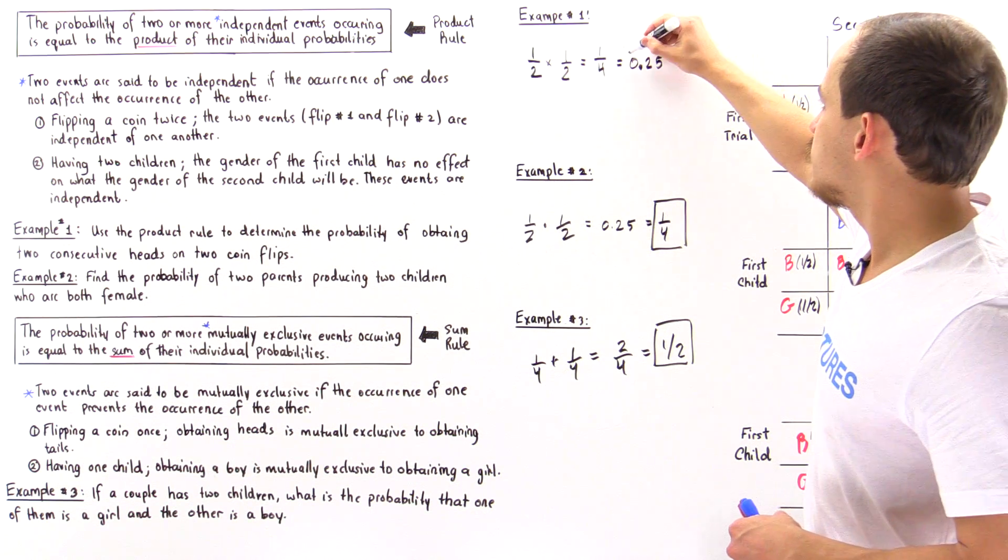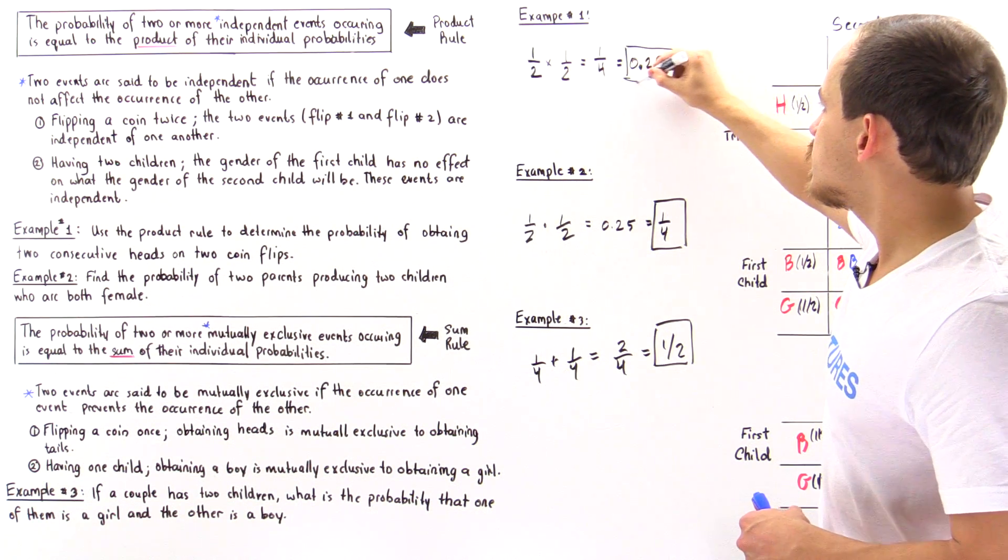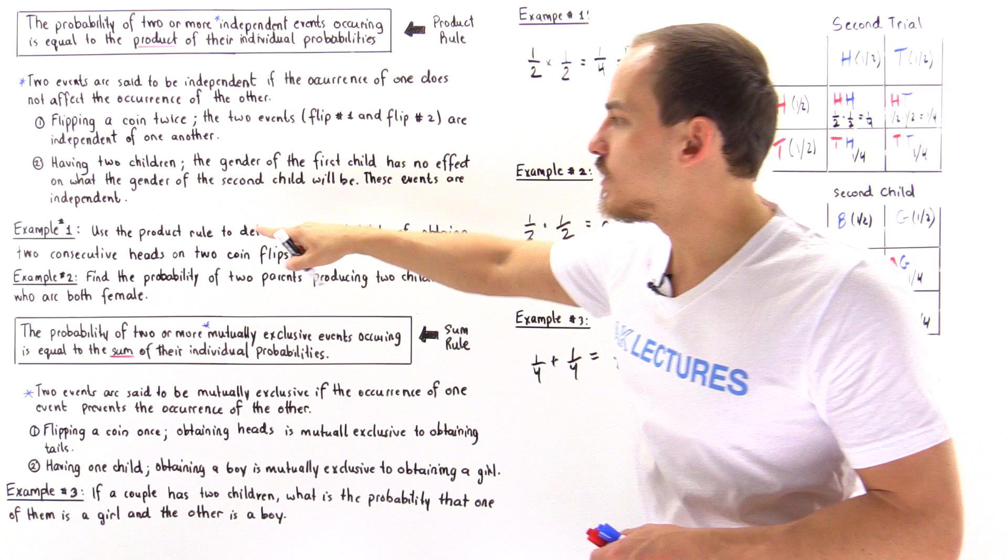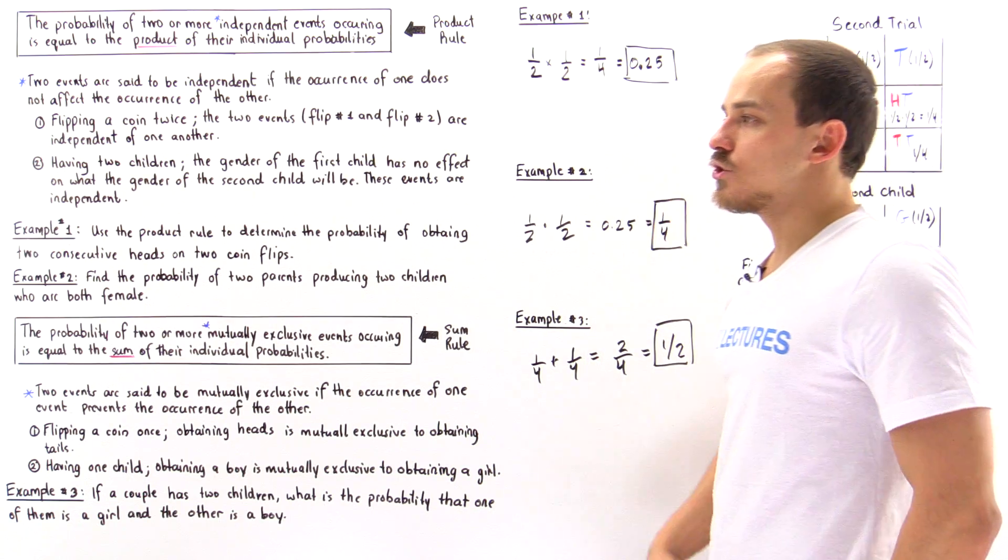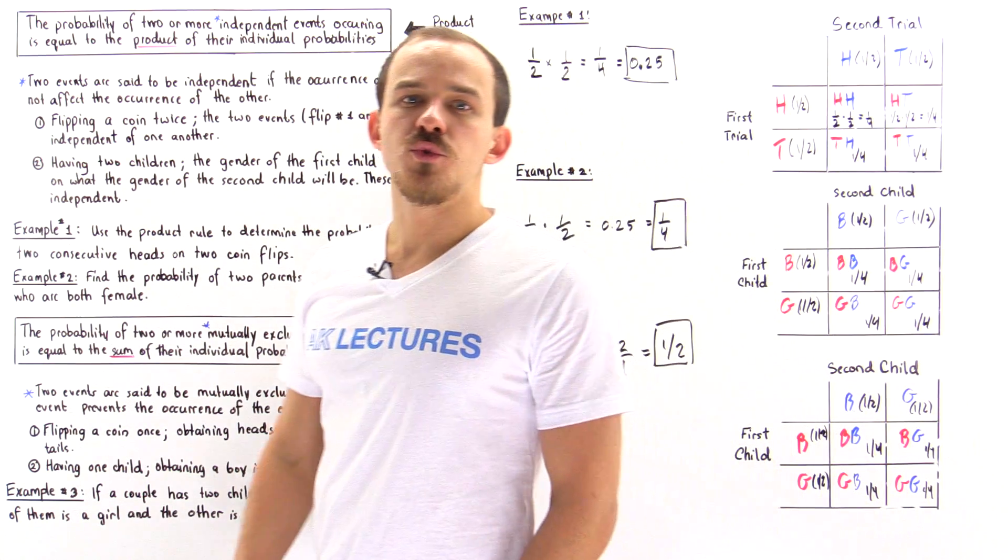This is the probability of getting two girls. And this is the probability of example number one, getting two consecutive heads on two consecutive coin flips. So these are the two common rules that we use in genetics.